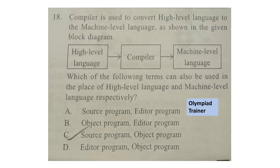Question 18: A compiler is used to convert high-level language to machine-level language as shown in the given block diagram: high-level language → compiler → machine-level language. Which of the following terms can also be used in place of high-level language and machine-level language respectively? The correct answer is option C — source program and object program.